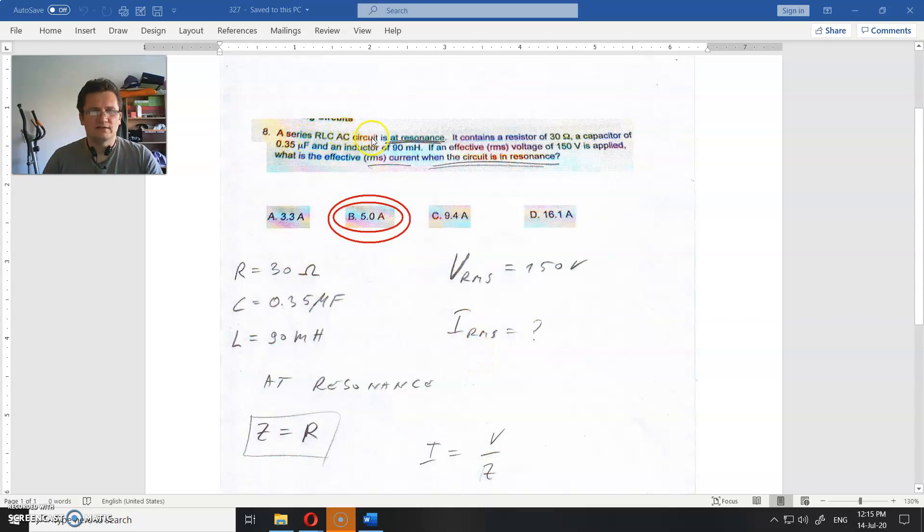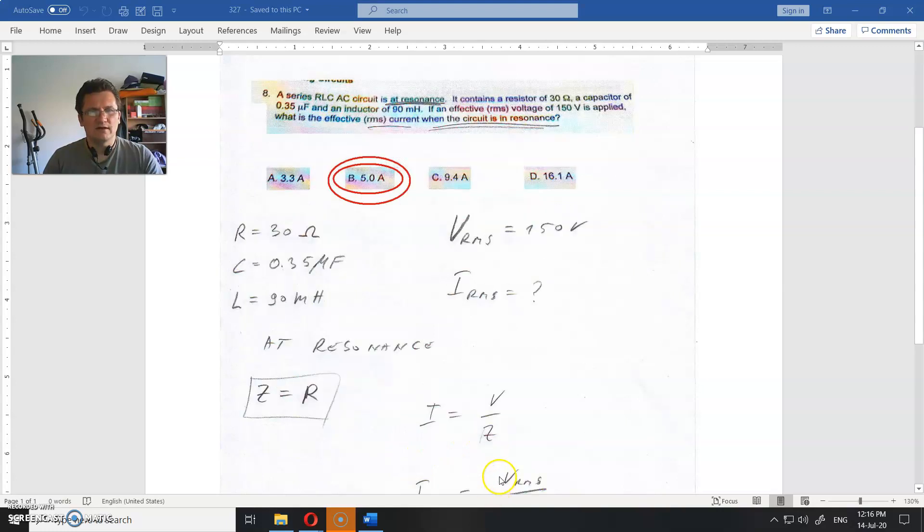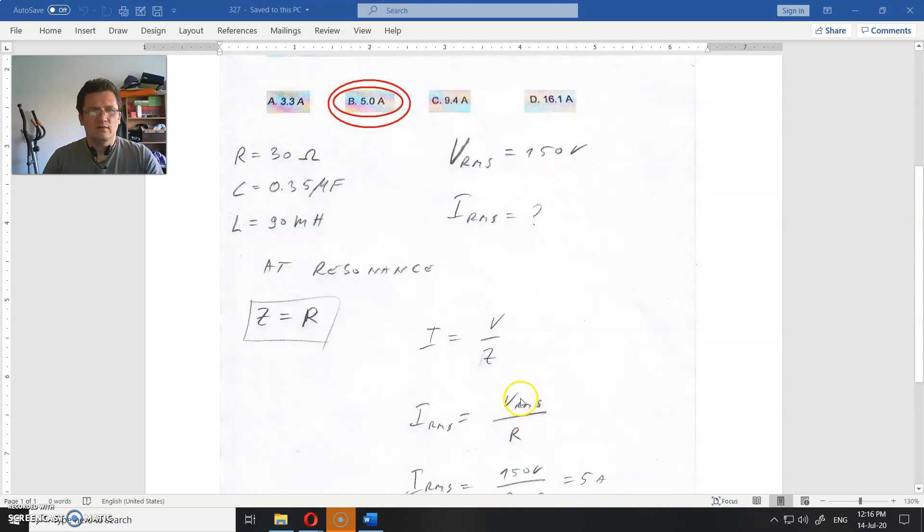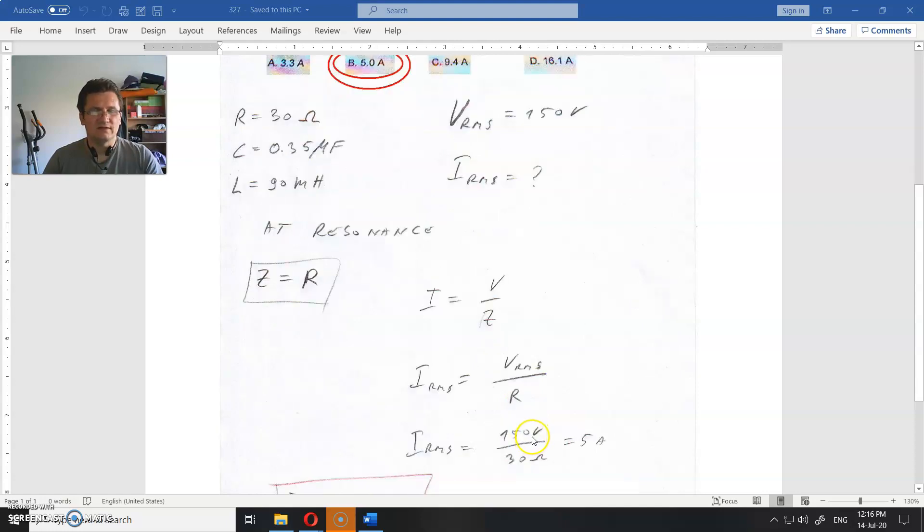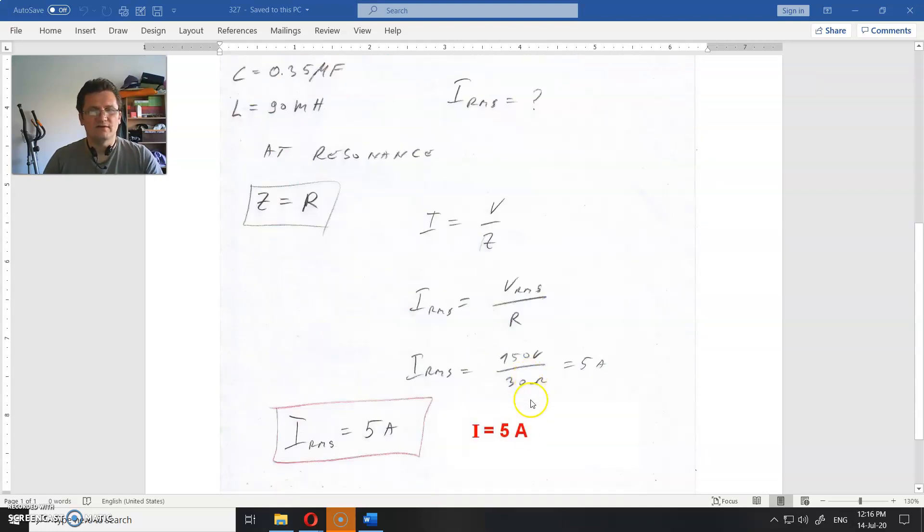For a series RLC AC circuit at resonance condition, impedance is equal to the resistance R. In that case, current is voltage divided by impedance, or here voltage divided by resistance, and that is 150 volts divided by 30 ohms, which equals 5 amperes.